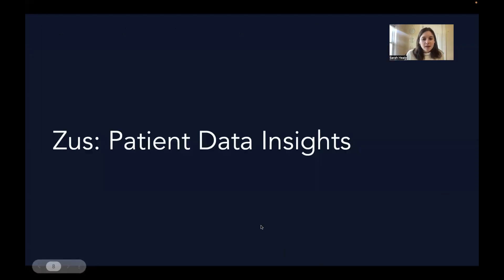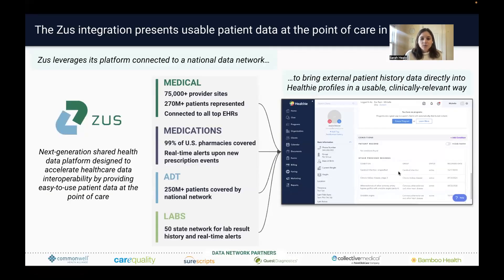Moving from the landscape into what Zeus does — this is where the new Zeus integration in Healthy comes into play. At Zeus, we are building a shared health data platform connected to a range of national data networks and unique sources of health data, starting with medical history, medications history, admit-discharge-transfer alerts, and labs history. We take this data, adjust it, store it on our platform, and then clean it up by standardizing it, crosswalking it to a specific terminology, organizing it by data type, and then surfacing it directly in the patient's Healthy profile.